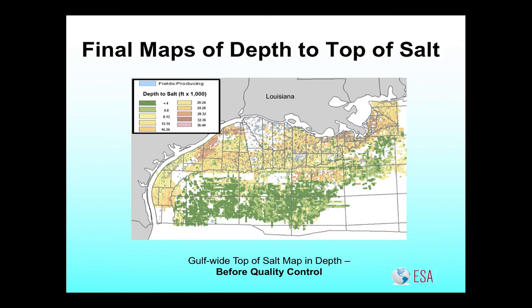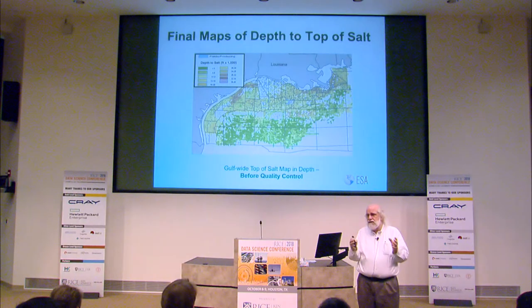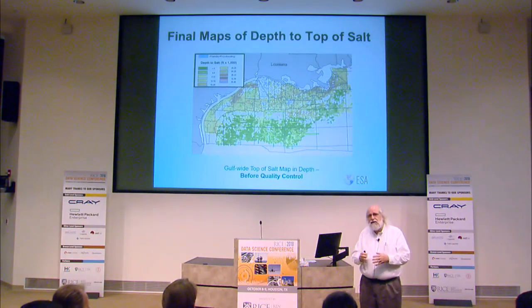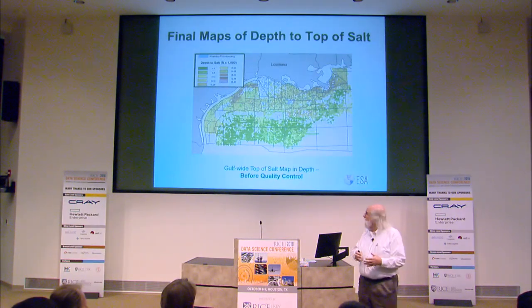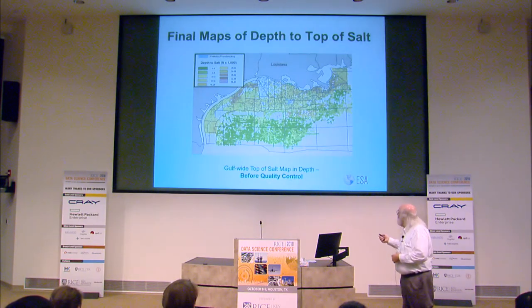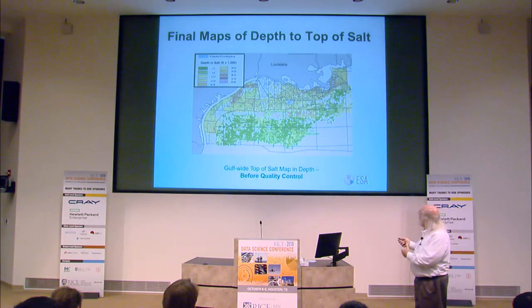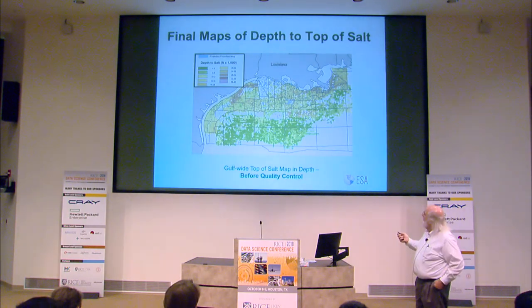Here's what we've done on a Gulf-wide basis. Lots of previous experiments used three, four, or five different lines identifying salt on seismic. This is 8,000 lines put together in an unsupervised format. This is our map of the top of salt, with green being the shallower salt, orange being the deeper salt, Gulf-wide.